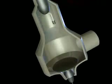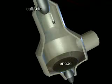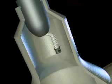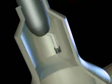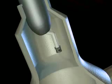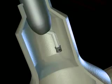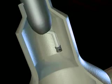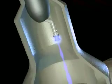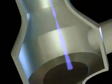It contains a pair of electrodes, or conductors, called a cathode and an anode. The cathode is a filament that releases energy with the introduction of an electrical current, much like that of a light bulb. The cathode energy is released in the form of electrons.